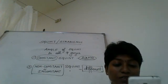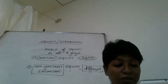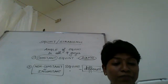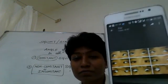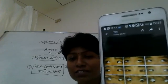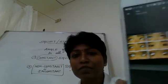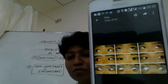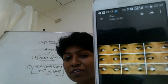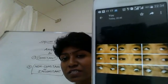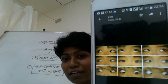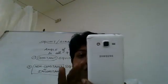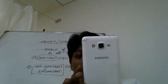Let me give you an example. If you look at this picture showing the nine gaze positions, in all nine cases the angle formed between the two eyes — the angle of deviation — is the same. So this is an example of comitant squint. Now I'll show you a non-comitant squint, which will be very obvious to you.